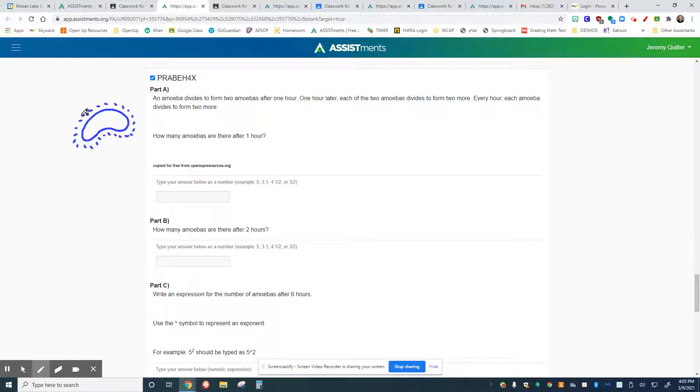And that amoeba divides to form two amoeba after one hour. So after one hour, we see that amoeba is now two amoeba. So one hour later, again, each of those two amoebas divided into the form of two more. So we see this constant pattern, where at zero hours, we saw just one amoeba.